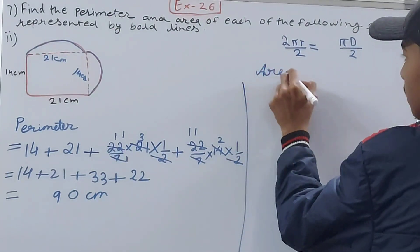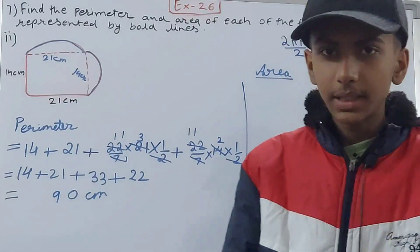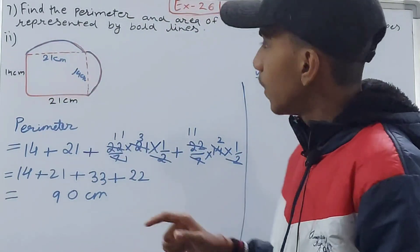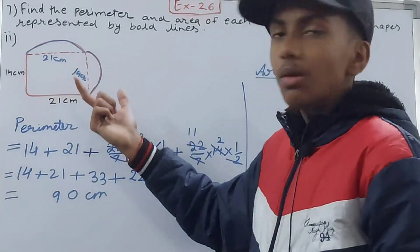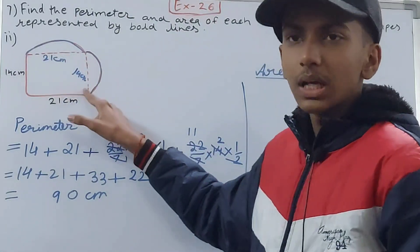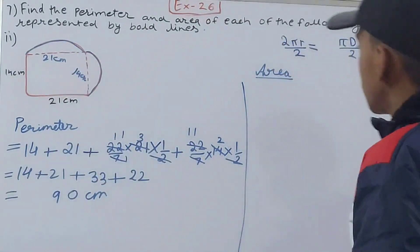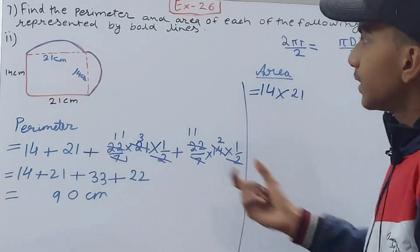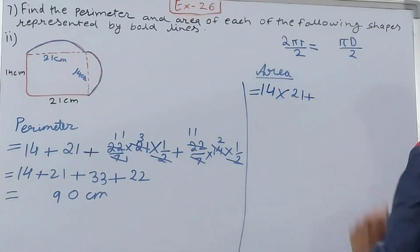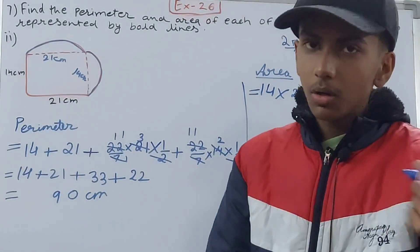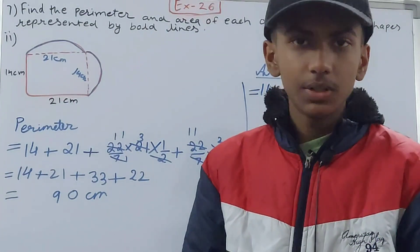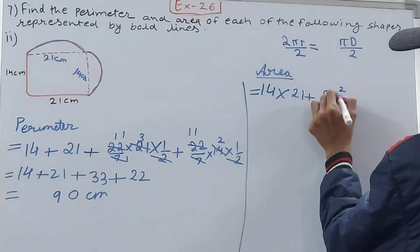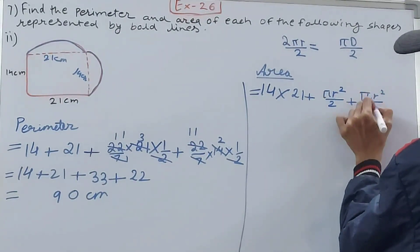Now for the area. We need to calculate the area of the rectangle as well as the area of the two semicircles. In the perimeter we were ignoring the rectangle's inner boundary, but for area we include everything. So: area = area of rectangle + area of both semicircles. The area of a semicircle is πr²/2, so we need the radii, not the diameters.